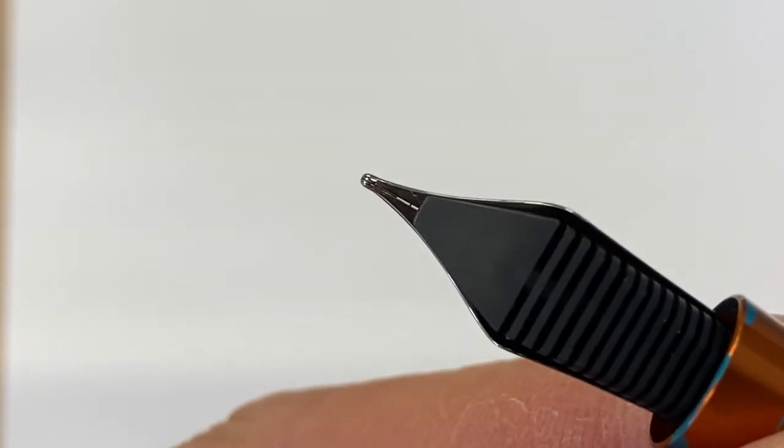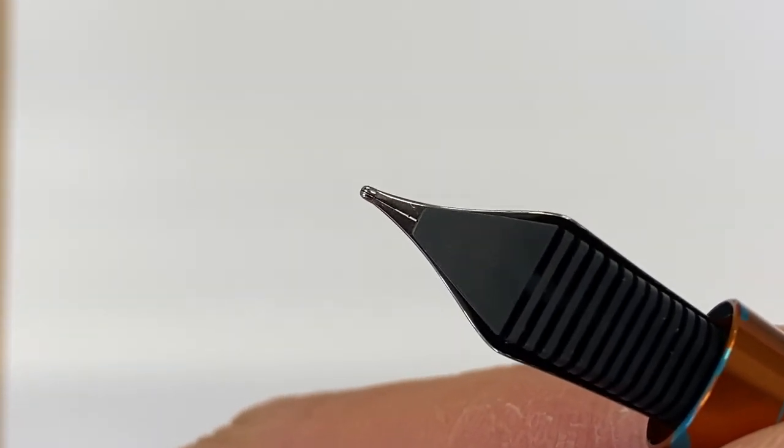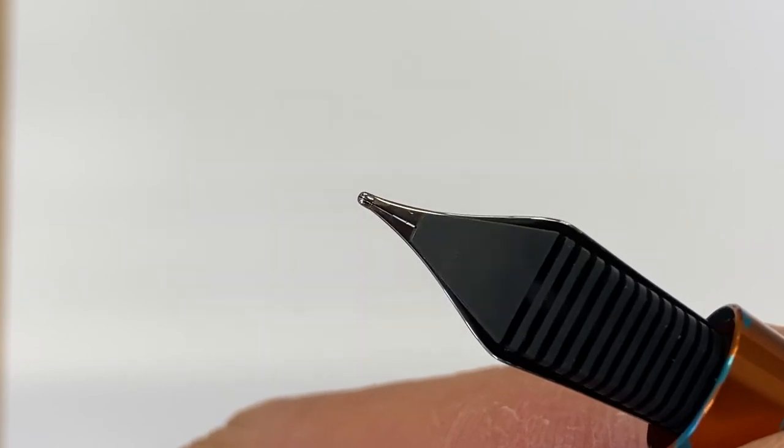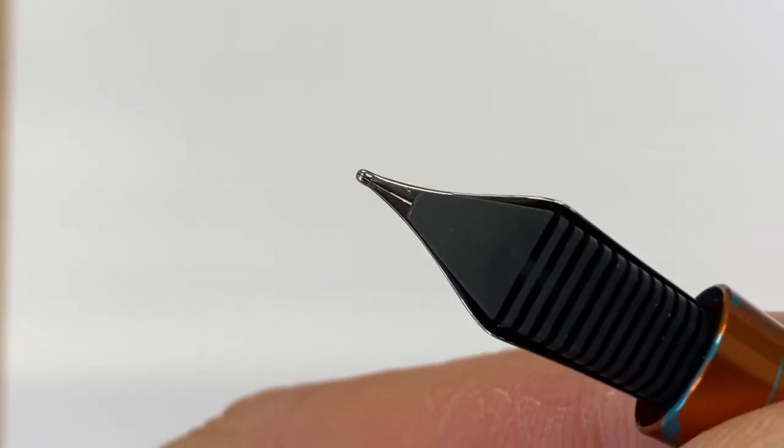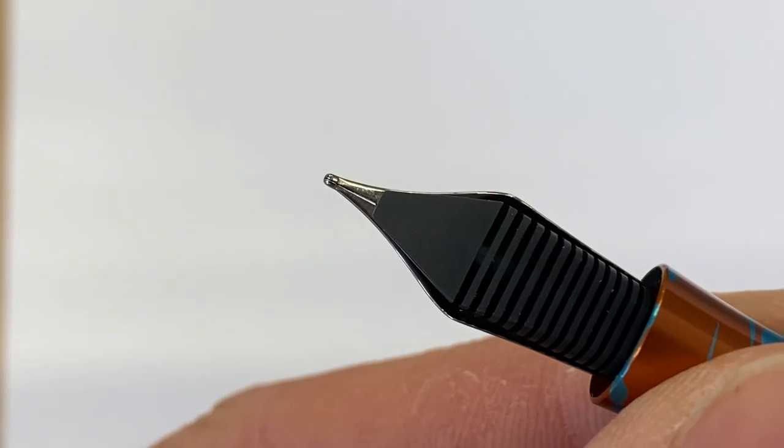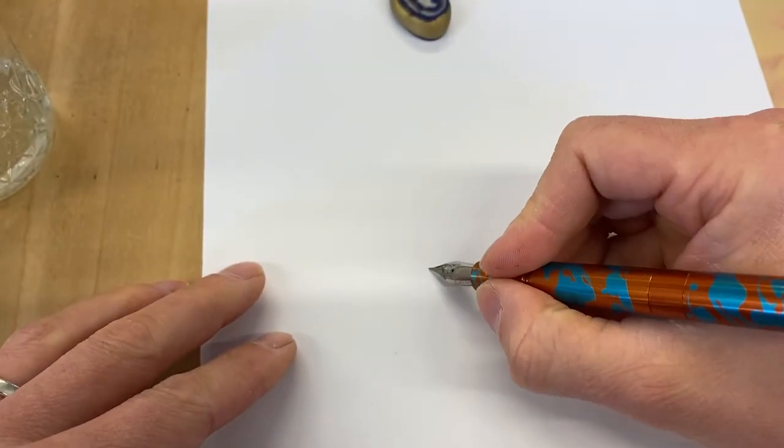Now what I want to show you is that, look, we have ink at the front of the slit of the nib but we do not have ink in between them. So if I were to write with this it's going to dry out immediately. Right, let's have a look. It's going to dry out after like one small line.